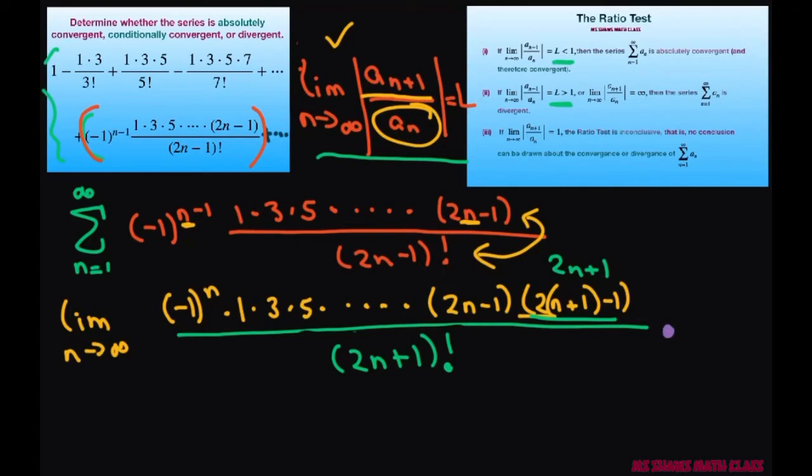So this is going to be times the reciprocal of this. So the numerator is going to be 2n minus 1 factorial divided by negative 1 to the n minus 1 power times 1 times 3 times 5 times dot dot dot times 2n minus 1.